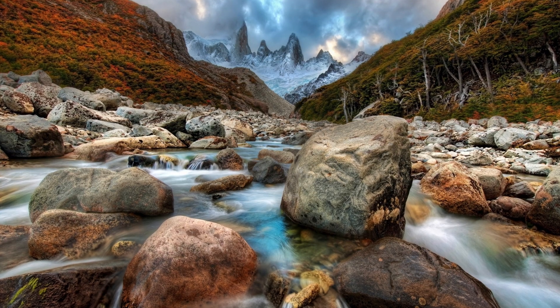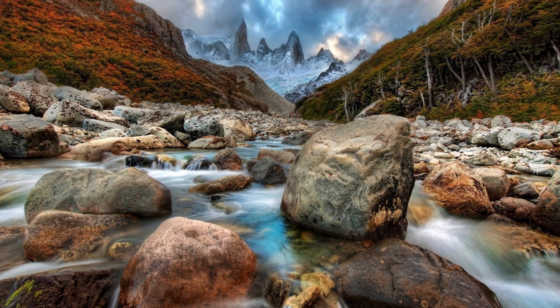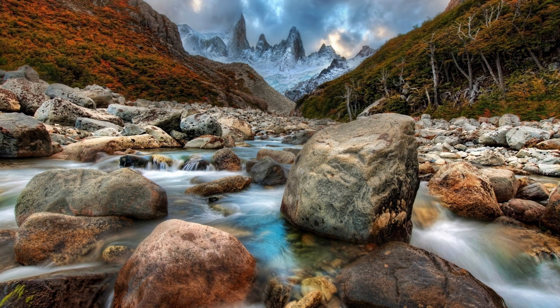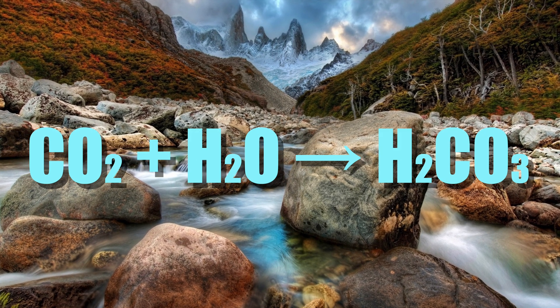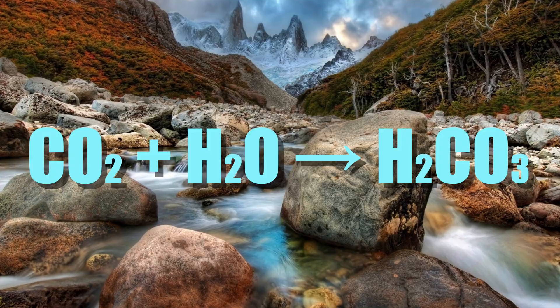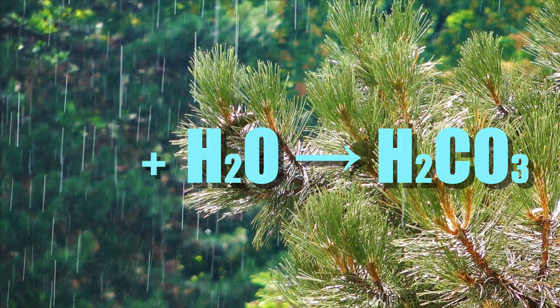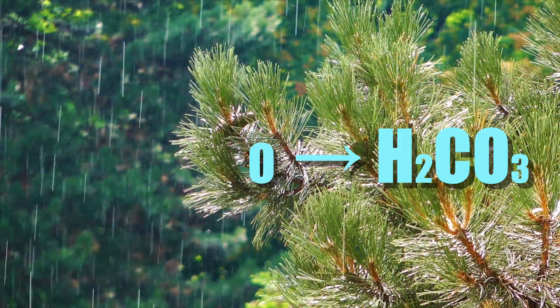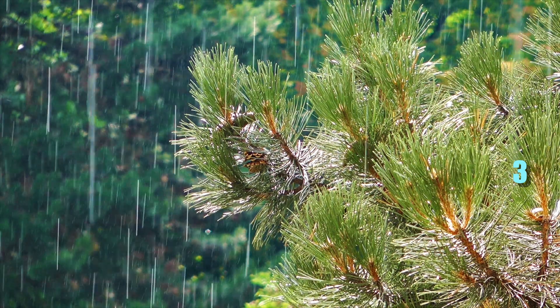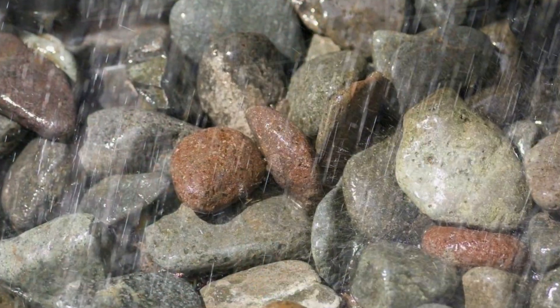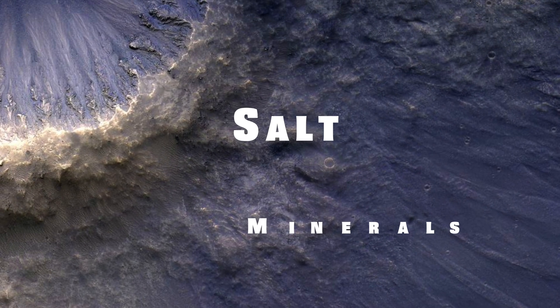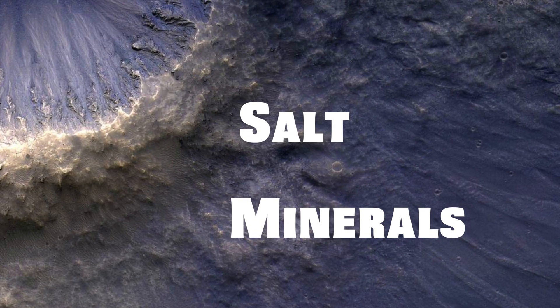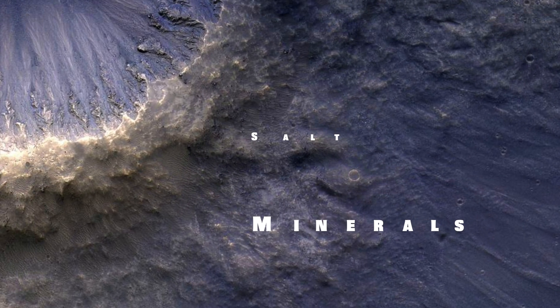Rocks on land are the major source of salts dissolved in the seawater. The carbon dioxide in the air dissolves in water to form weak carbonic acid. This makes rainwater slightly acidic. The rain physically breaks down the rocks into pieces.